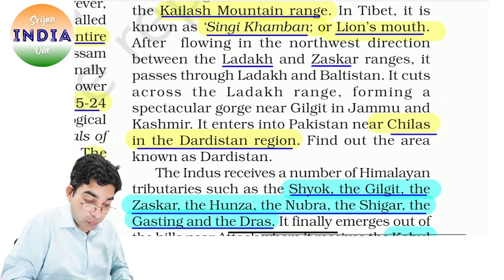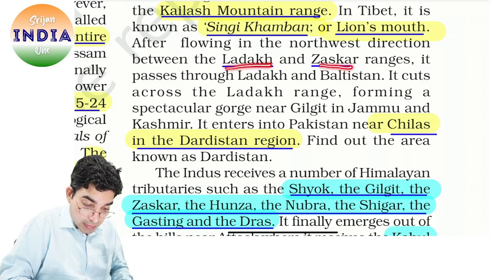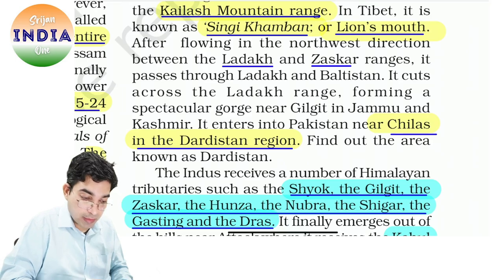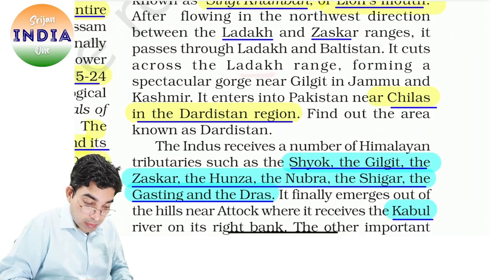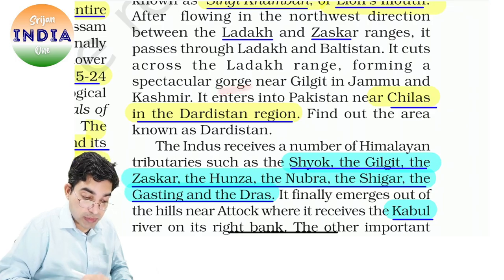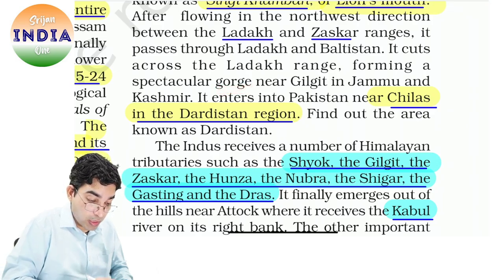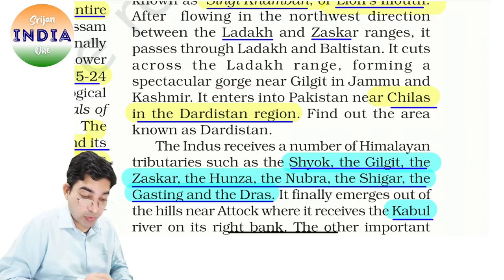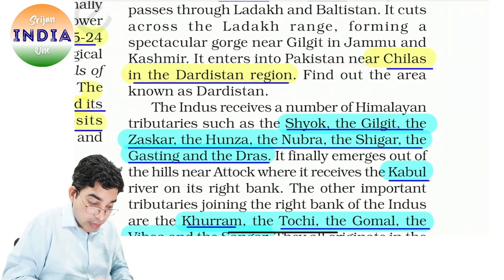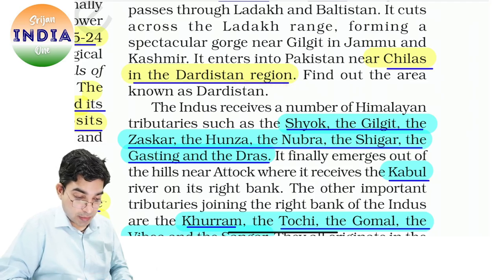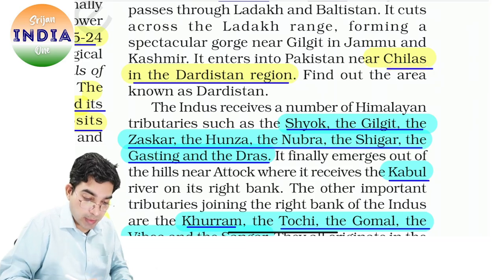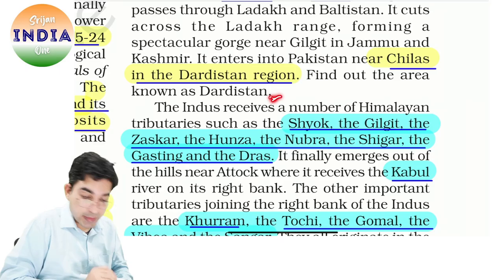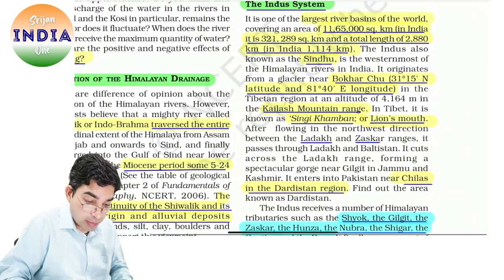After flowing in the northwest direction, between Ladakh and Zaskar range, it passes through Ladakh and Baltistan. Across the Ladakh range it forms a spectacular gorge — rivers ki stages hoti hain: youthful, mature, old. Gorge se Gilgit, Jammu and Kashmir mein, phir Pakistan mein, Chilas ke paas, Dardistan region mein enter karti hai. Yahan Himalaya wagera se nikal ke is plain mein aa rahi hai — Chilas in Dardistan region, Pakistan mein ja rahi hai. Is region mein abhi bhi Himalaya mein hai — is area ko Dardistan bolte hain.